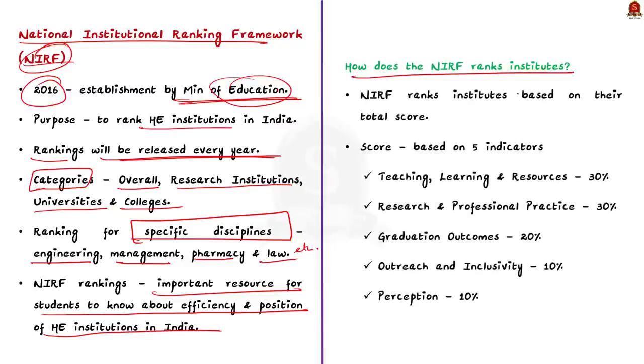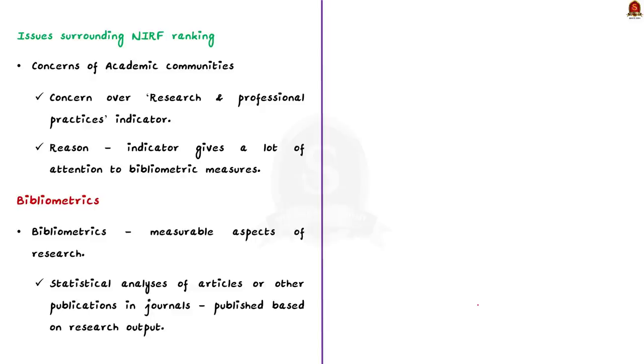The NIRF ranks the educational institutes based on their total score. To determine this score, the NIRF uses five indicators and each of these indicators has a certain weightage. The five indicators are teaching, learning and resource with 30% weightage, research and professional practice with 30% weightage, graduation outcomes with 20% weightage, outreach and inclusivity with 10% weightage and finally, perception with 10% weightage. These are the five indicators based on which the total score is calculated for a particular higher education institute. The score in turn is used to rank the institute.